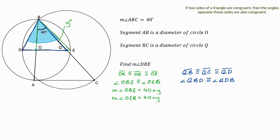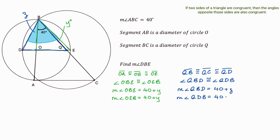Let's label a few more angles. Let's call angle OBD — Z. We know that angle QBD is composed of angle QBO and angle OBD. Since the measure of angle QBO is 40 degrees and OBD measures Z degrees, we can say that the measure of angle QBD is 40 plus Z. And since QBD is congruent to QDB, the measure of angle QDB is also 40 plus Z.